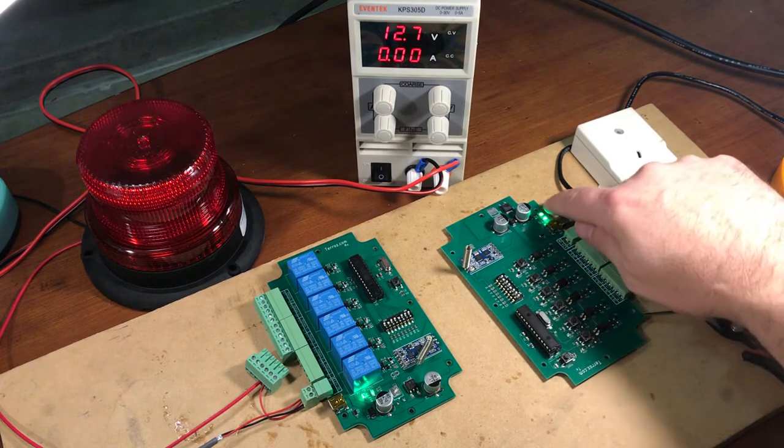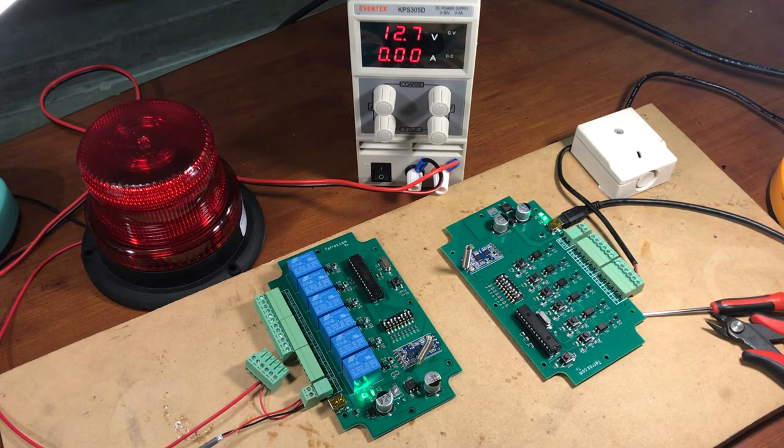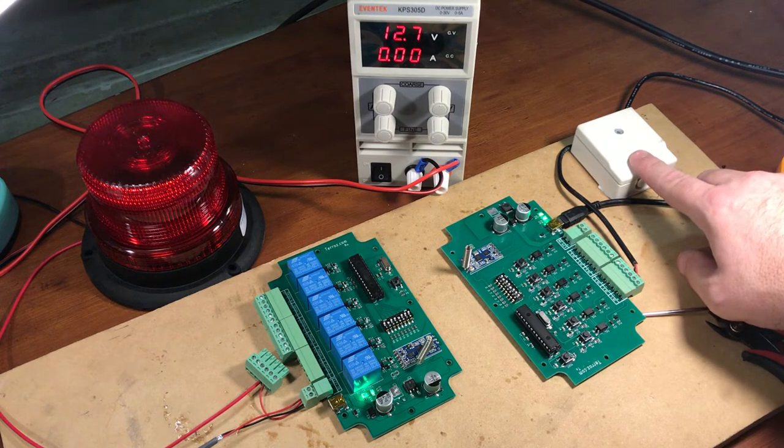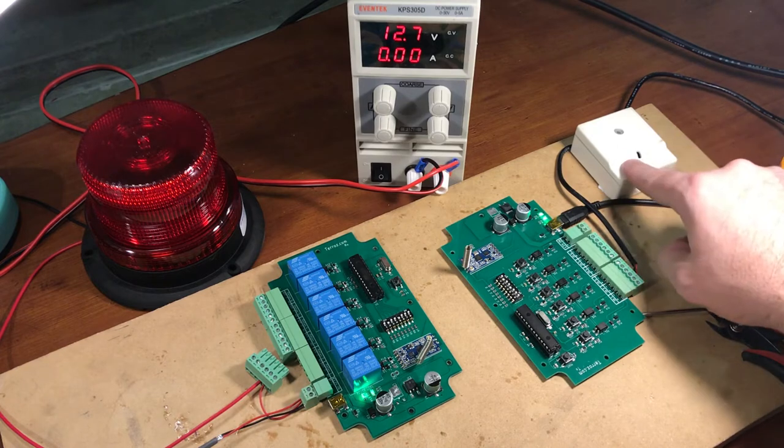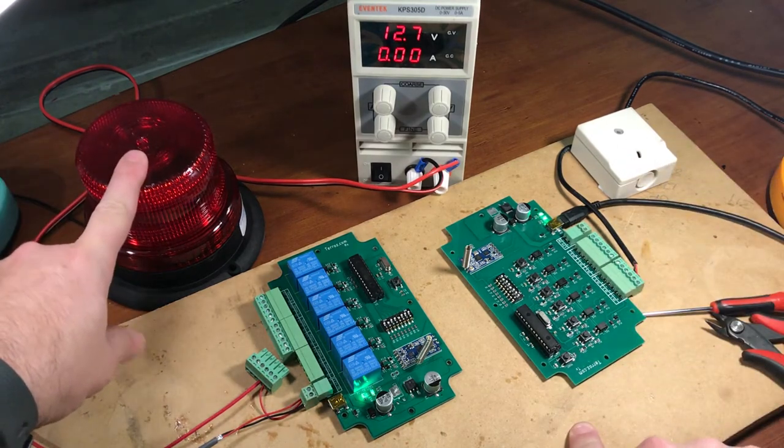Now I've hit the LEDs here with a little bit of Sharpie so they're not so bright into the camera. A good demonstration of this is I have an old panic button here from an alarm job I put in a bank years ago. I was replacing switches and I kept one. I have a strobe here.